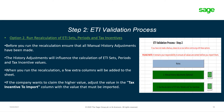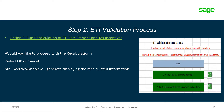Moving forward to option two: run recalculation of ETI sets, periods and tax incentives. Before you run the recalculation, ensure all the manual history adjustments have been made. The history adjustments will influence the calculation of the sets, periods and tax incentive values. When you run the recalculation, a few extra columns will be added to the sheet. If the company wants to claim a higher ETI value, adjust the value in the tax incentive to import column. Once you select option two — run recalculation of ETI sets, period and tax incentive — there will be a message asking would you like to proceed with the recalculation. Select OK or Cancel.